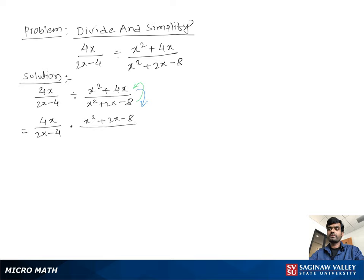So you can write x square plus 2x minus 8 over x square plus 4x. Now we can write 4x times x square plus 2x minus 8 over 2x minus 4 times x square plus 4x.